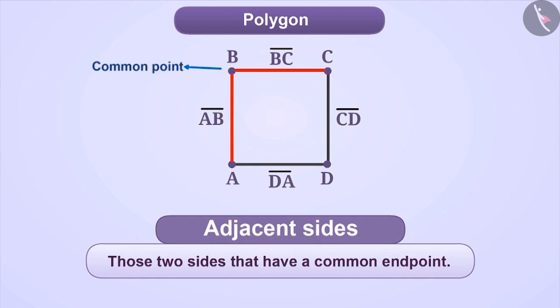Therefore, here sides AB and side BC are adjacent sides to each other. So, can you tell me which other sides are adjacent to CD?